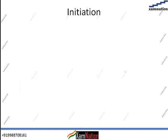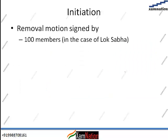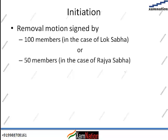The initiation step requires a removal motion to be signed — either by 100 members in case of the Lok Sabha, or by 50 members in case of the Rajya Sabha. It is not necessary for both houses to sign; either the Lok Sabha may initiate it, or the Rajya Sabha may initiate it. For example, the recent impeachment motion was initiated in the Rajya Sabha, the upper house of Parliament.